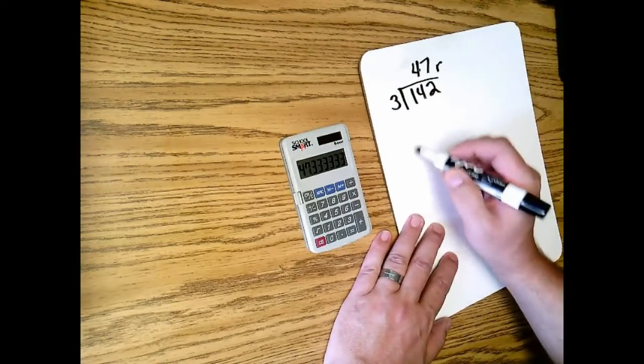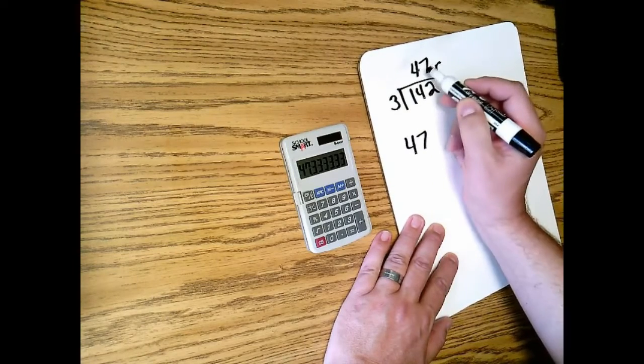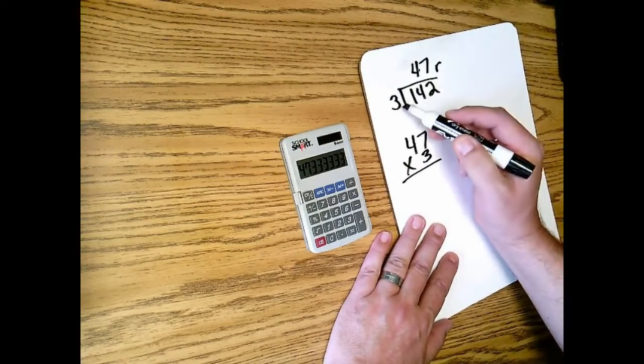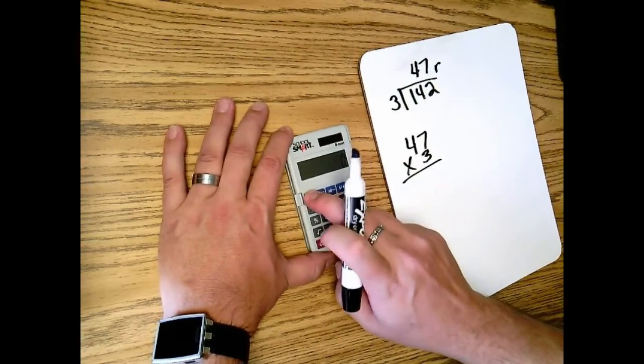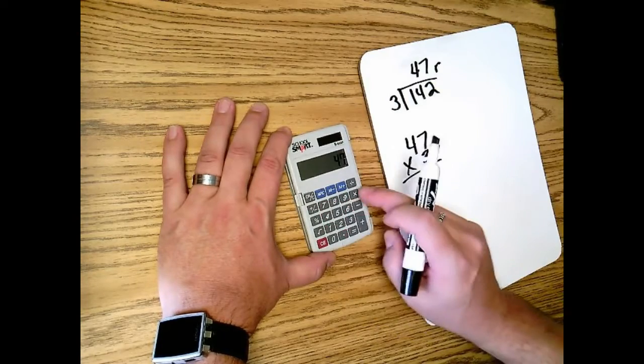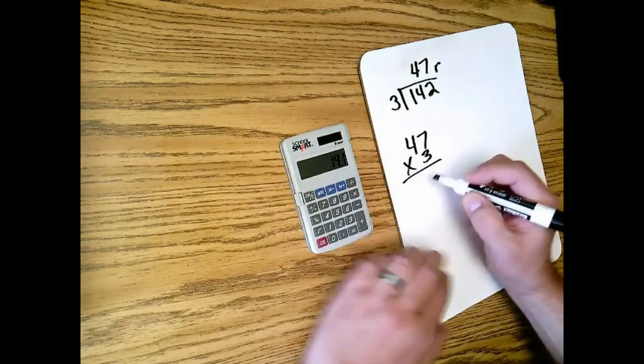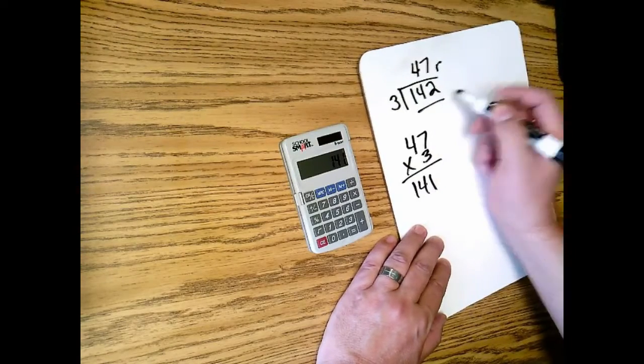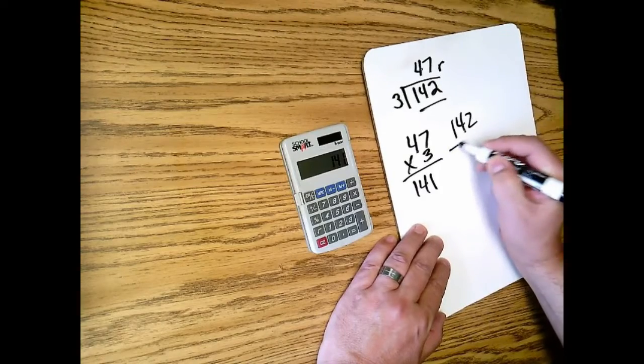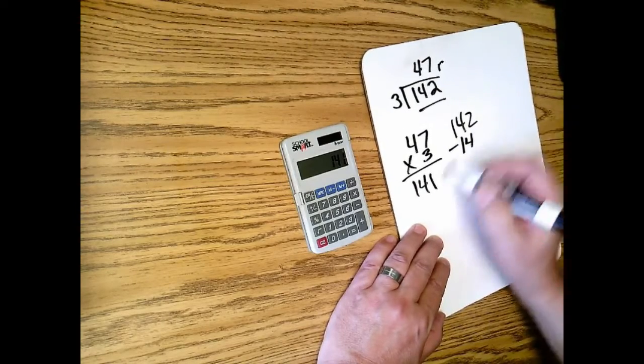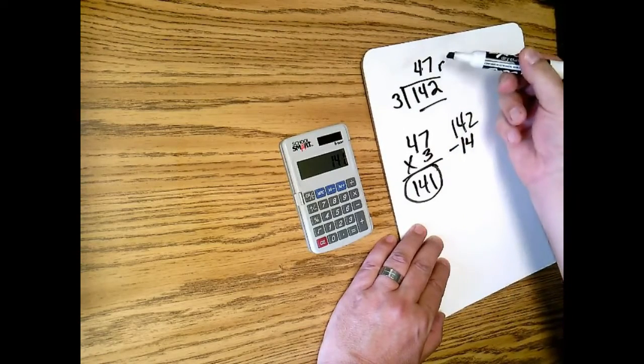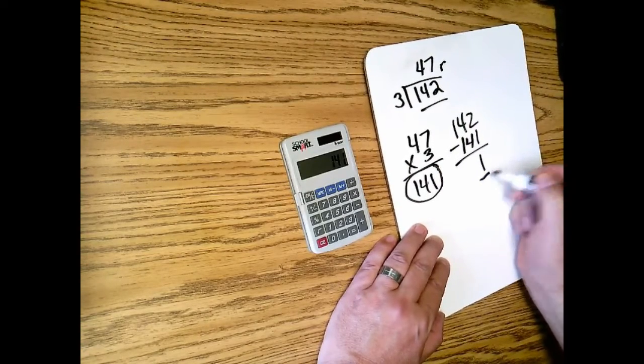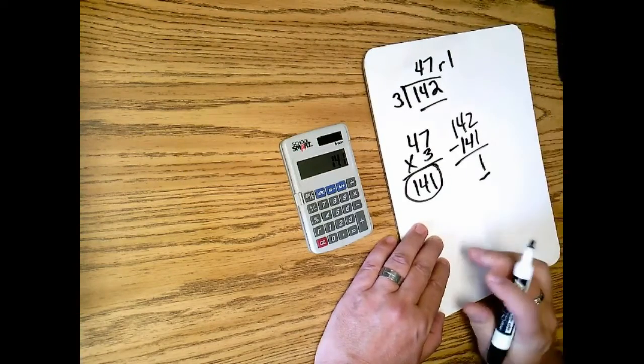So if I hit clear, I'll do it twice. If I hit 47 times 3 and hit the equal, it gives me 141. Now I have to take this a little bit further. And now I take my dividend, which was 142, and I subtract this product that I got by multiplying the quotient and the divisor. And I wind up with my remainder. And that will give me a remainder of 1 in this instance.